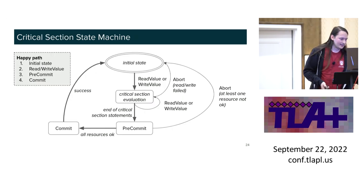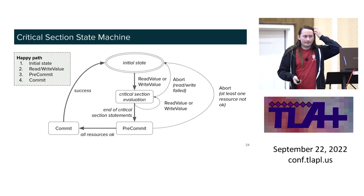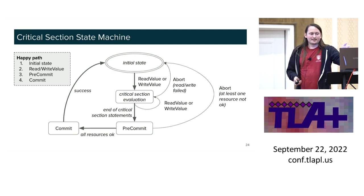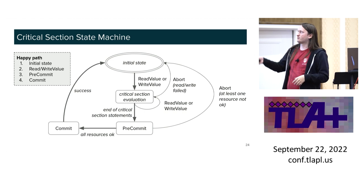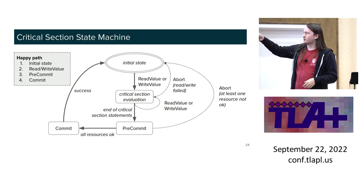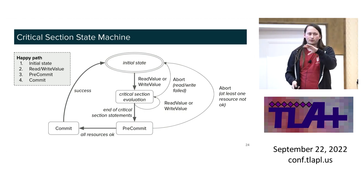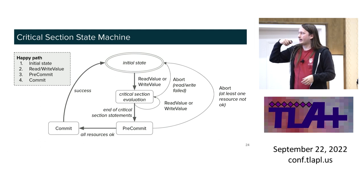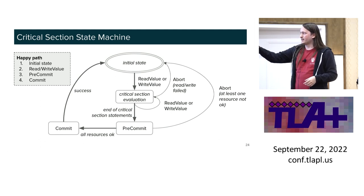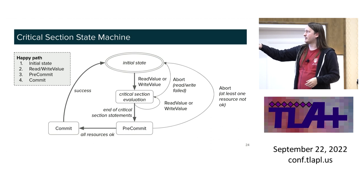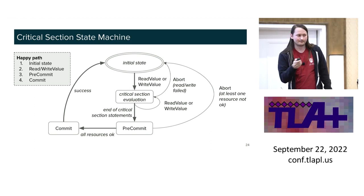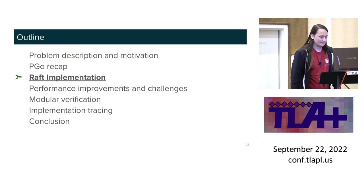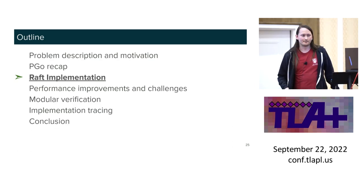For the state machine: your happy path starts in an initial state, you do reads, writes, and local computations. If done, you try pre-commit. Everything up to and including pre-commit may abort and throw everything out. Otherwise you commit and go to success. That has been PGO in some minutes.